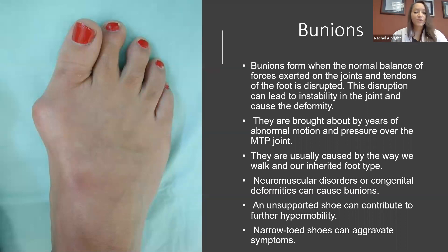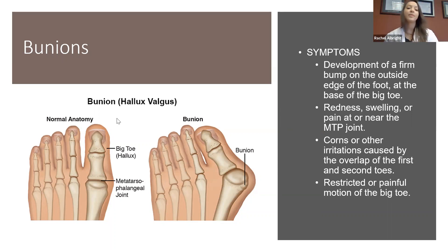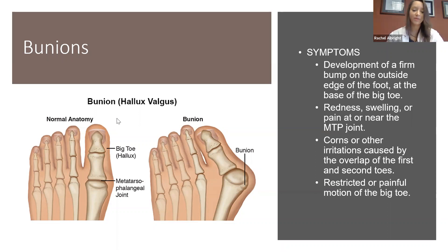Narrow-toed shoes can also aggravate symptoms and lead to bunions. In normal anatomy, the toe is nice and straight with bones right on top of each other. With a bunion, the toe deviates off the joint — the joints are not aligned, causing subluxation — and that creates the big bump on the side of the foot. People may experience redness, swelling, pain at that joint, corns or calluses, irritation, and restricted or painful motion at the big toe joint.